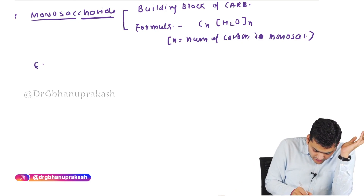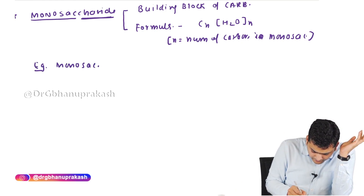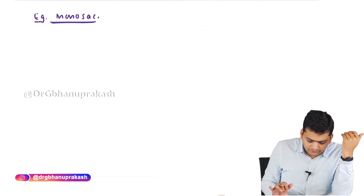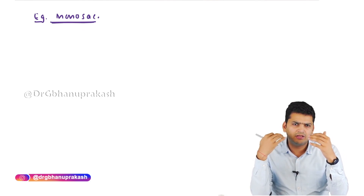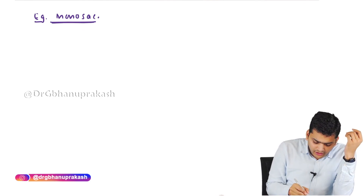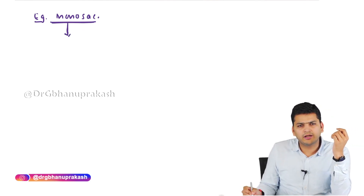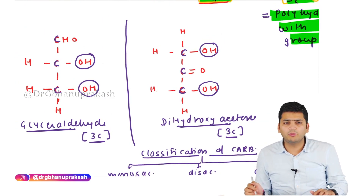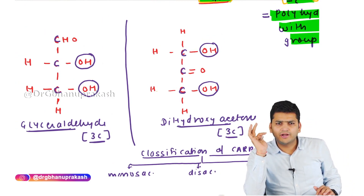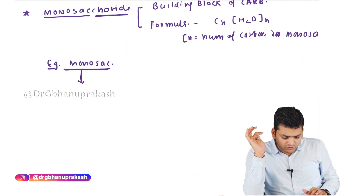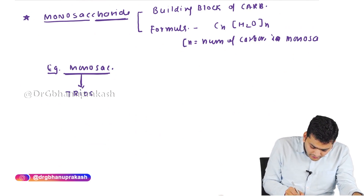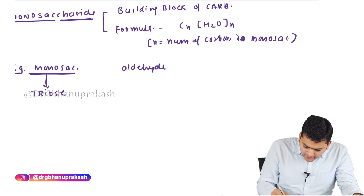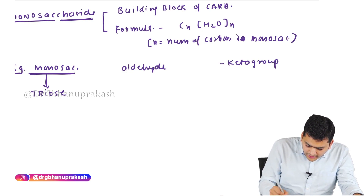The examples of monosaccharide are classified by how many carbons are present. The smallest possible monosaccharide is a triose with three carbons. A triose made with the aldehyde group is called glyceraldehyde; made with the keto group it is called dihydroxyacetone. A tetrose has four carbons.